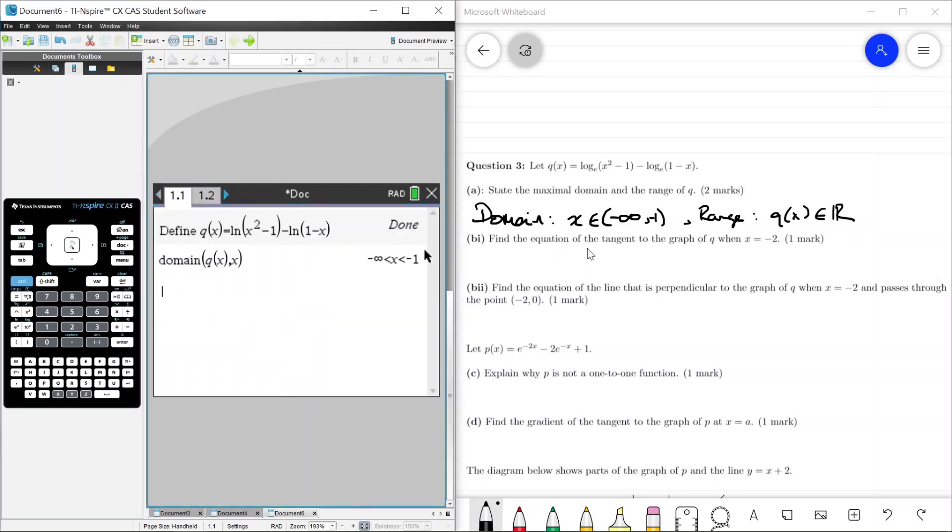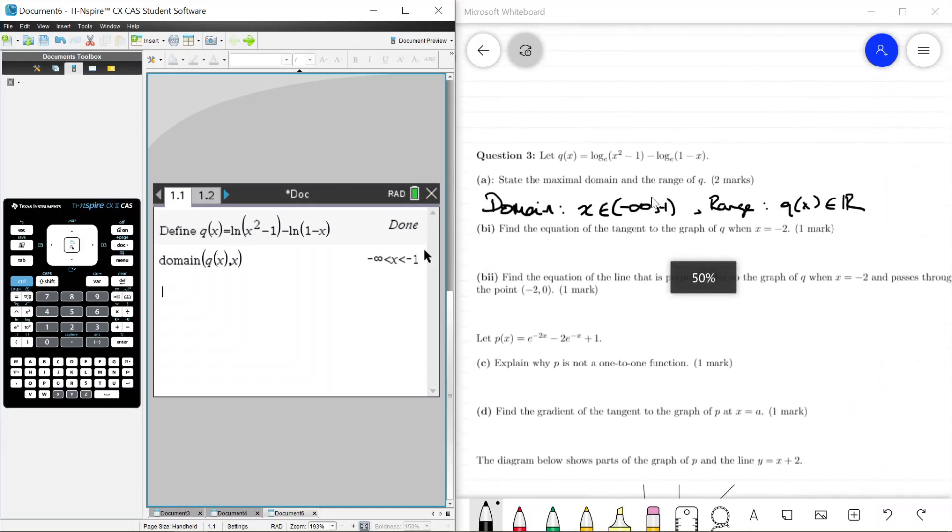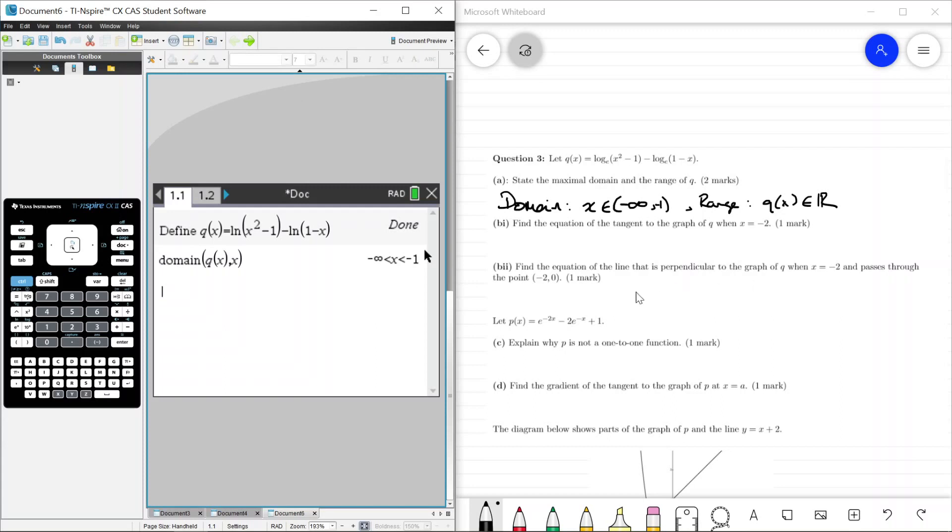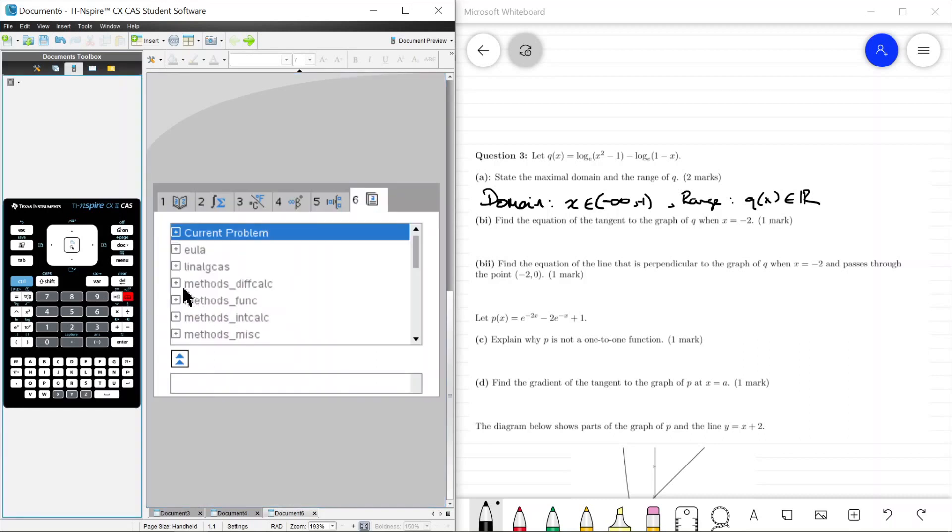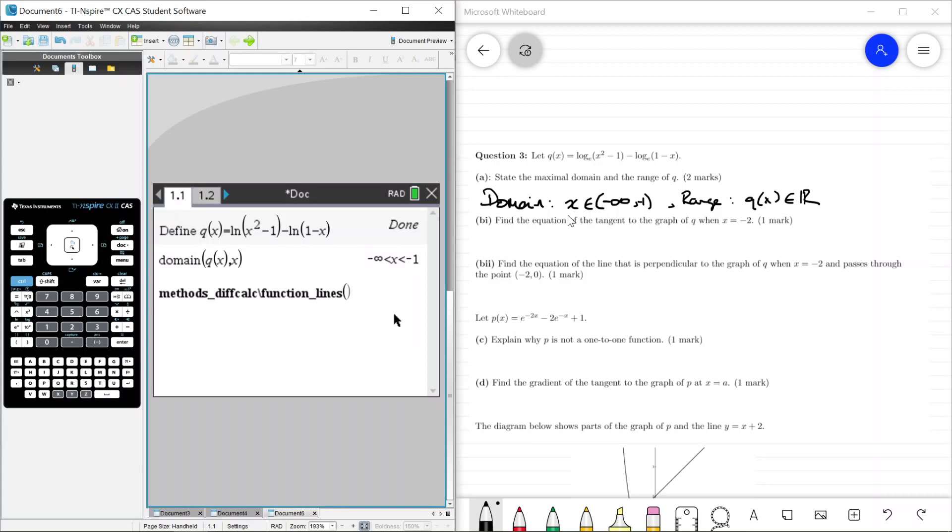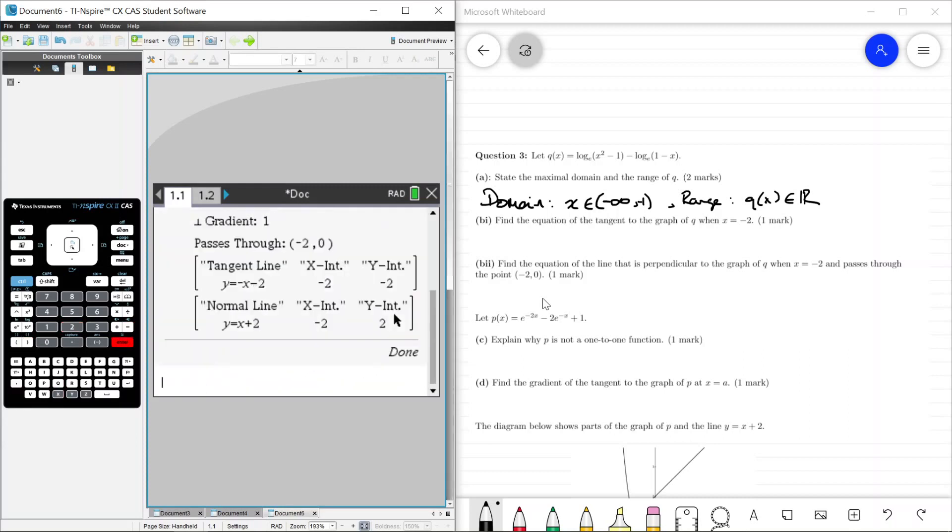So question B, find the equation of the tangent to the graph of Q and X equals minus 2. During reading time what I would pick up is the second part of part B, which is find the equation of the line that is perpendicular to the graph of Q when X equals minus 2, which is at the exact same point. So that's the normal line. If you're asked about the tangent line and the normal line, what better program to use than the function lines program. We're going to put in Q of X, comma the variable, comma the point minus 2, and tangent line is Y equals minus X minus 2, and the normal line is Y equals X plus 2.